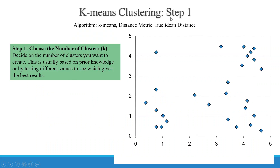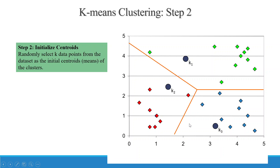In K-Means clustering Step 1, we have the data points. We choose the number of clusters — this is typically based on prior knowledge or by testing different values to see which gives the best results. For this data, we will select three clusters: K1, K2, and K3.